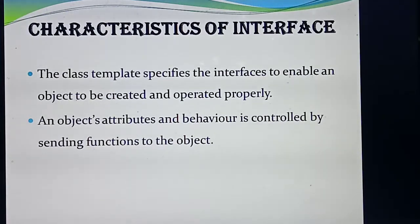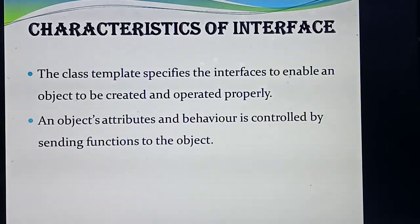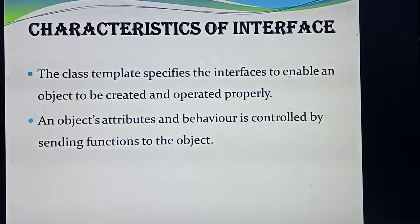So to summarize the characteristics: first, the class supports the interface concept and checks whether the object is created and working properly. Second, attributes and behavior are controlled by sending functions to the object. Today I have taught three questions: what do you mean by interface, what do you mean by implementation, and what are the characteristics of interface? These three questions are very, very important.